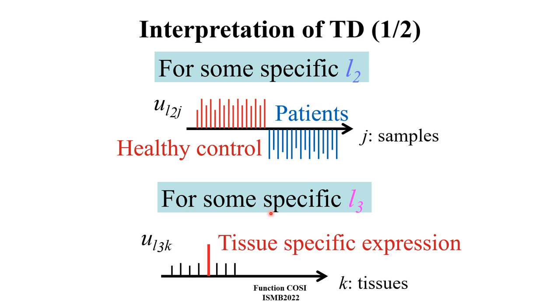We want to find DEGs, differentially expressed genes, that differ between a patient and control and are tissue-specific. So we first find the sample-dependent vector UL2j, such that there is difference between patient and control. Then we find UL3k, which has differences between tissues, like this.